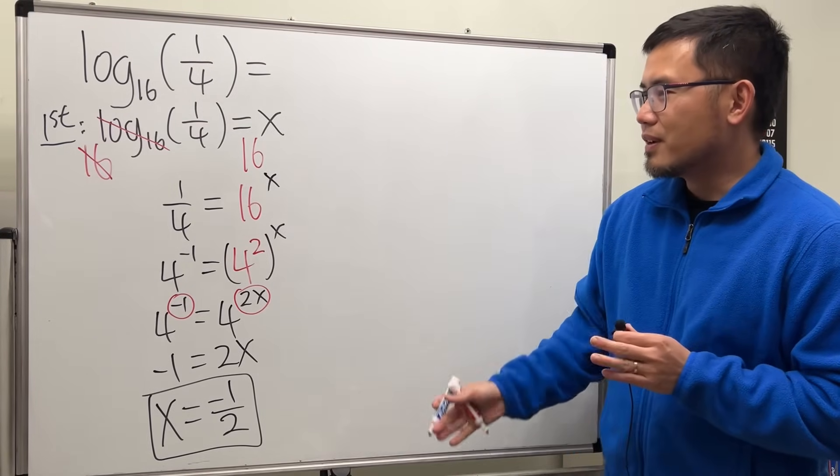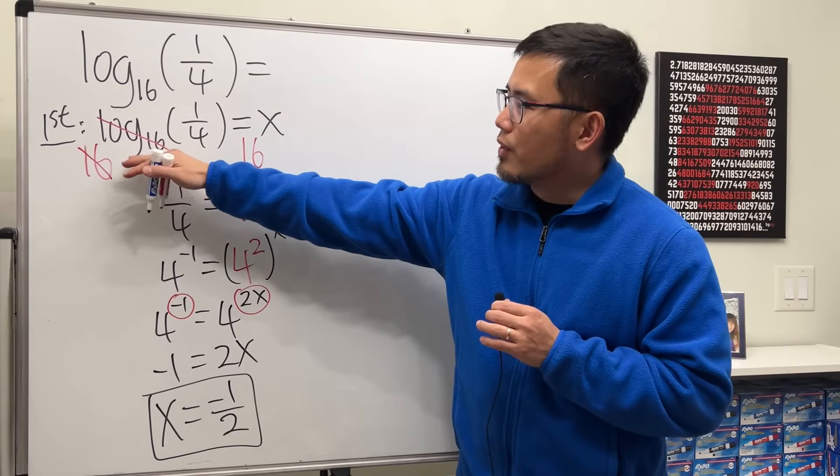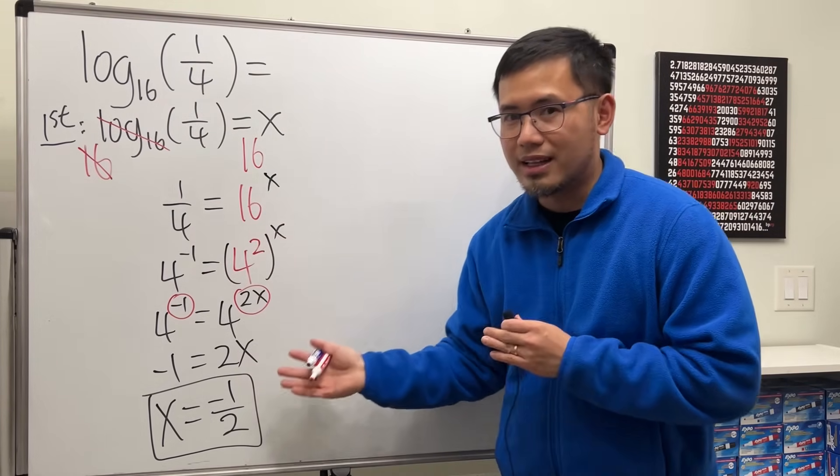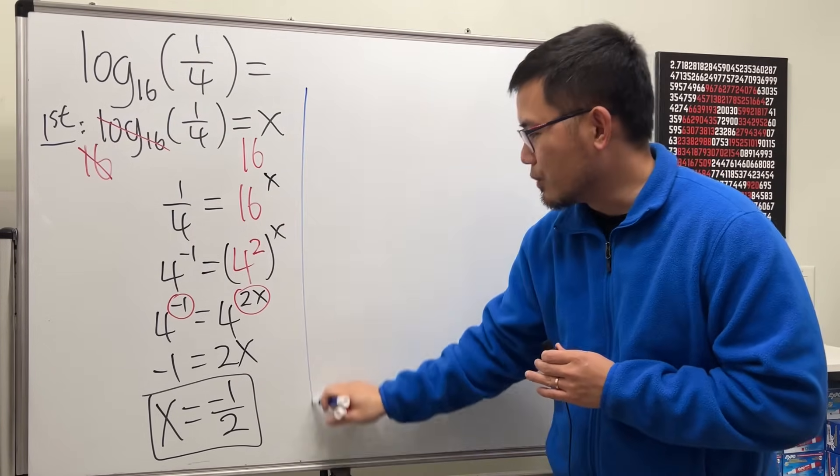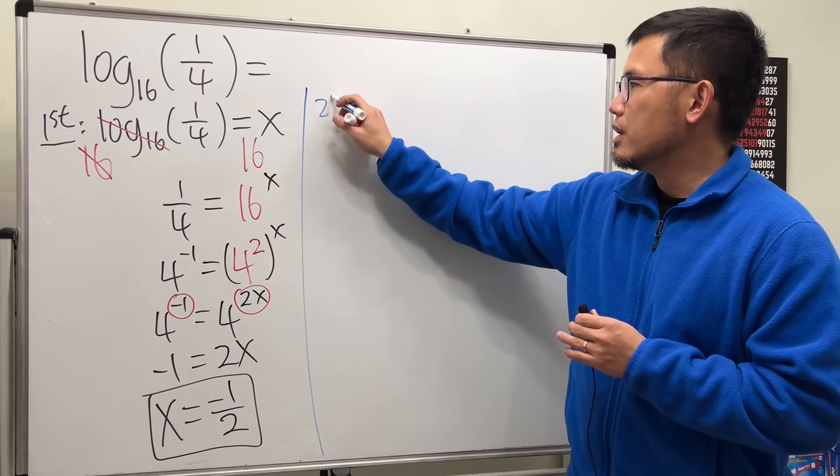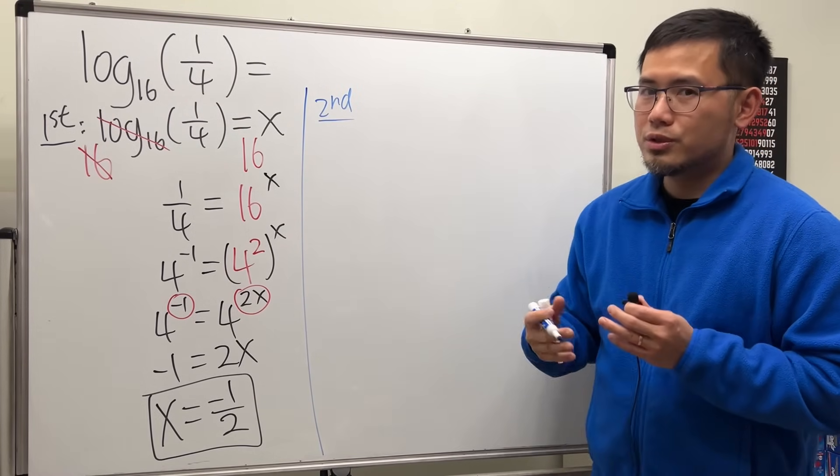So that's the first way, by changing from the log to an exponential and then just work that out. Now here is the second way to do it.